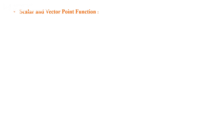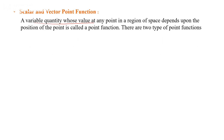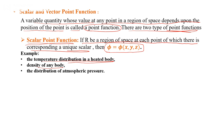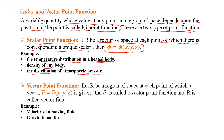A scalar point function is a variable quantity whose value at any point in a region of space depends on the position of that point. If at each point of a region r there corresponds a unique scalar, then φ = f(x, y, z) is a scalar point function. Examples include temperature distribution in a heated body, density of a substance, and distribution of atmospheric pressure.